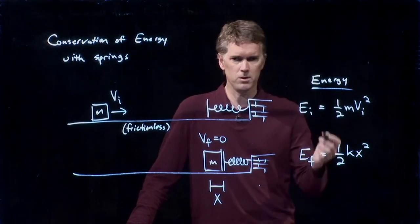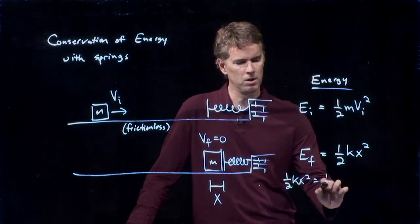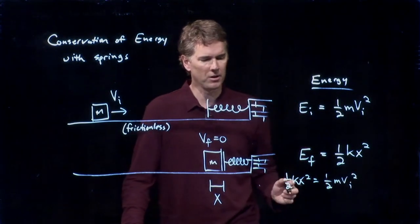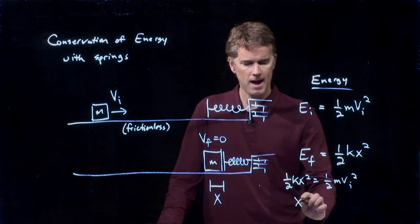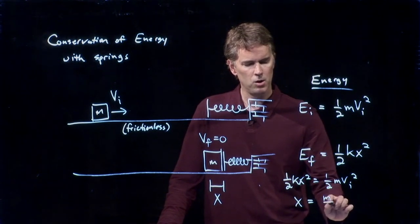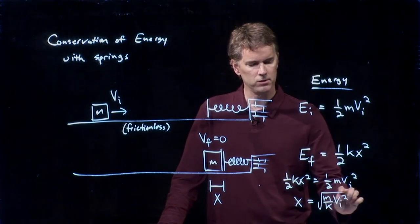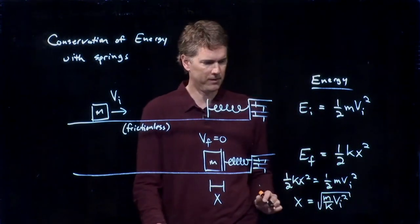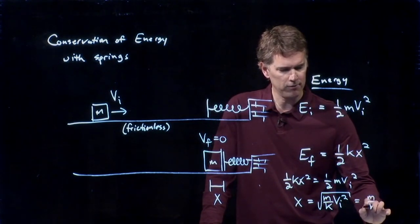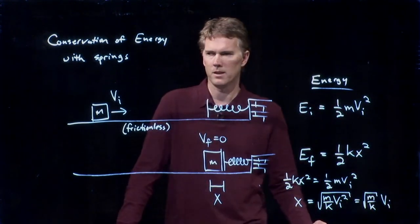All right, these are equal. So I get one-half kx squared equals one-half m v i squared. And now I can quickly solve this thing for x. The halves go away. I can write this as x is equal to m over k v i squared. And I'm going to take the square root of that whole thing. If I take the square root of v i squared, I can, in fact, bring it out of the square root. And so we can write the whole thing like that.